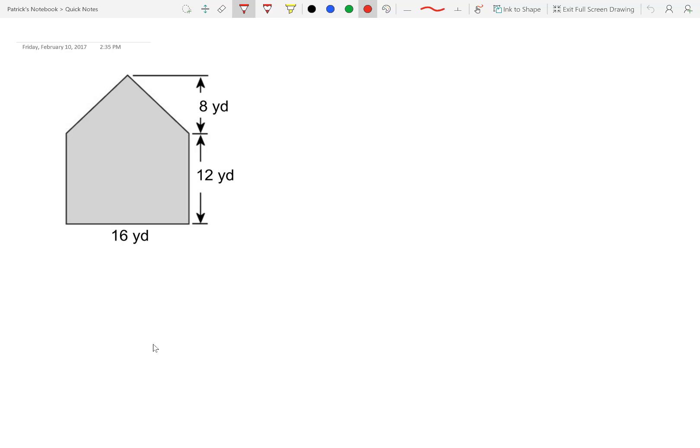Okay, today we're going to be talking about how to find area of compound shapes. So here I have a shape, which is a pentagon, but it's difficult to know the formula for that. So what I want to do is I'm going to break it into two shapes.